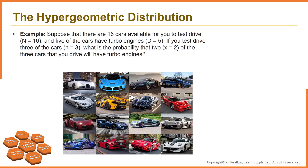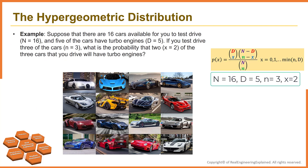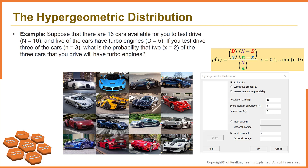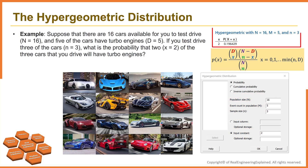Let's go back to the turbo car example. Simply plug in 16 instead of N, 5 instead of d, 3 instead of small n, and 2 instead of x. The probability that you will randomly select exactly two cars with turbo engines when you test drive 3 of the 16 cars is 19.64%. You can get the same result from Minitab — go to the Calc menu, select Probability Distributions, select Hypergeometric, and enter these values. The result will be 19.64%.